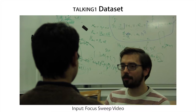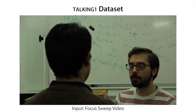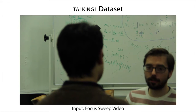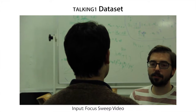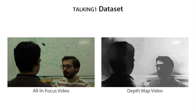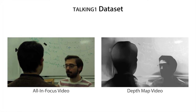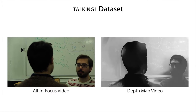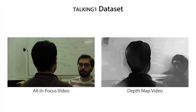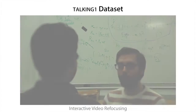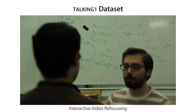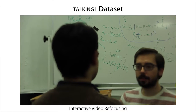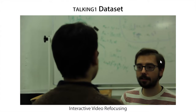We now show an extended video of a dynamic scene with multiple focus ramps captured by a moving camera. Note that the focus continuously moves from the front of the scene to the back and to the front again. These are the all-on-focus and depth videos reconstructed by our method. Here we refocus the input video with a larger aperture and hence smaller depth of field, first focusing on the whiteboard in the background and then on the person facing the camera.